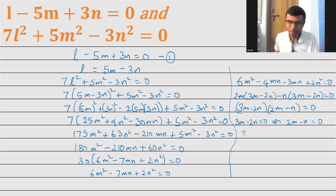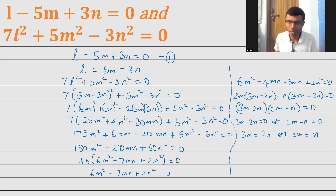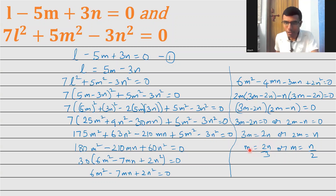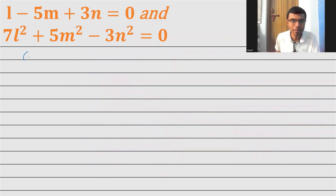My purpose is to write everything in terms of n, so I'm trying to find m in terms of n. From 3m minus 2n equal to 0, sending 3 across: m equal to 2n by 3. From 2m minus n equal to 0: m equal to n by 2. Now I'm going to take Case 1 as m equal to 2n by 3.